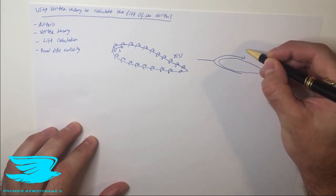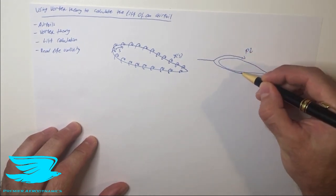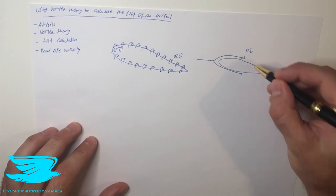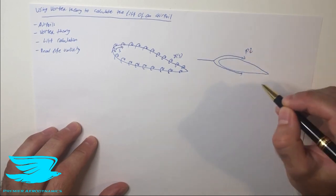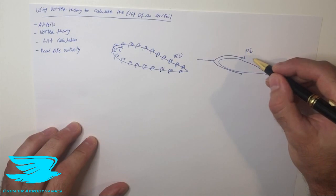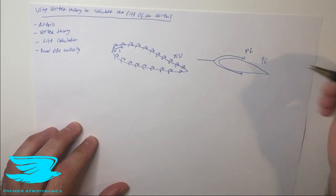The flow over the top accelerates which means that the pressure drops, and the flow over the bottom the pressure also drops a little bit but not as much as the pressure on top usually. That results in a net negative pressure on top which then results in lift being produced.